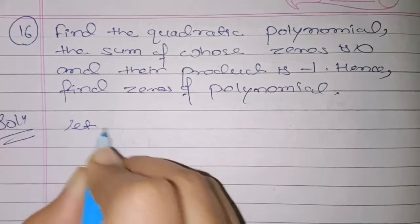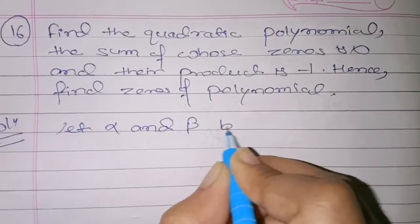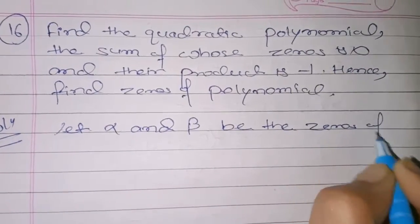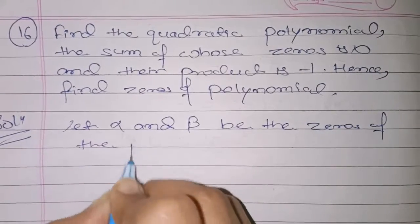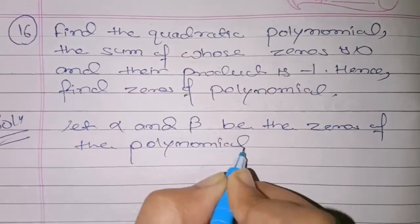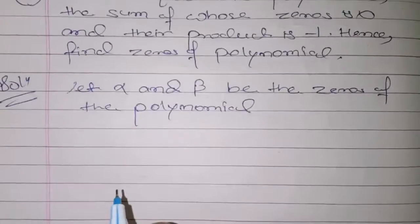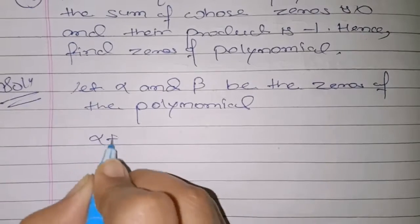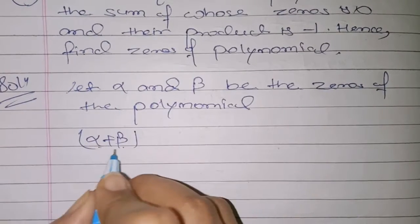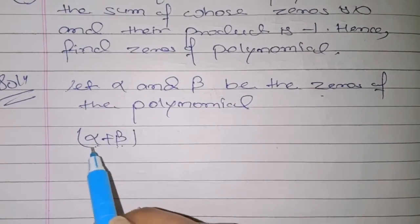Let alpha and beta be the zeros of the polynomial. Alpha and beta mean the zeros of the polynomial. Then what do we have to find — alpha plus beta, i.e., the sum of zeros. Alpha and beta when we find zeros — alpha and beta is the sum of zeros.